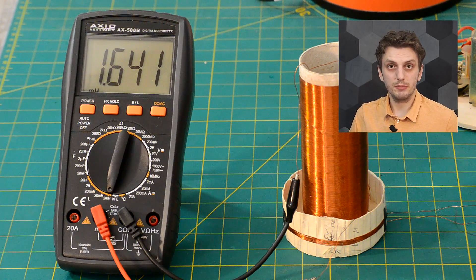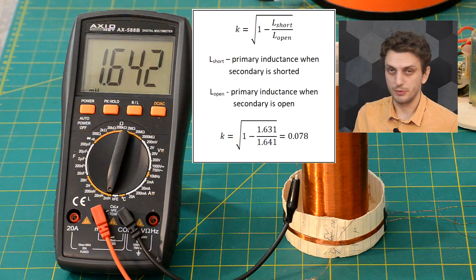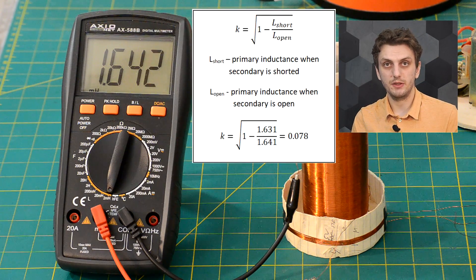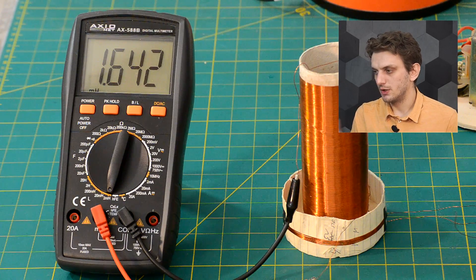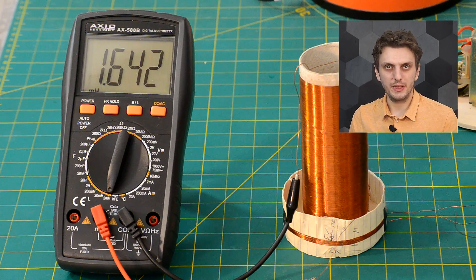So we barely dropped about 10 microhenry. So again if we go through the numbers we can see that for this particular transformer the coupling factor is only about 7.8 percent. So this is a clear example of a weak coupling.